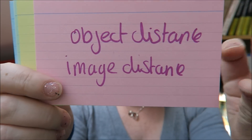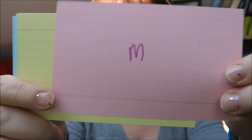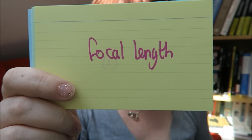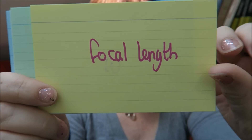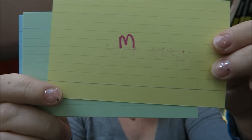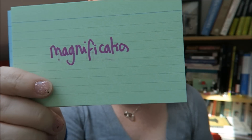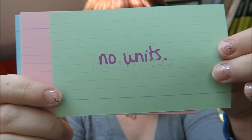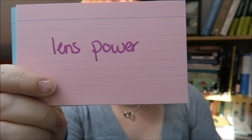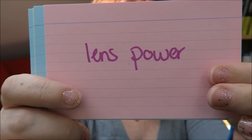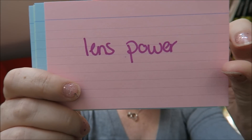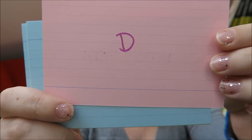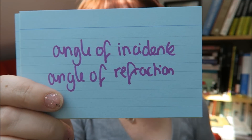Object distance and image distance are measured in meters. Focal length is measured in meters. Magnification has no units. Lens power — now this is a tricky one because people think it's watts, but it's actually diopters.